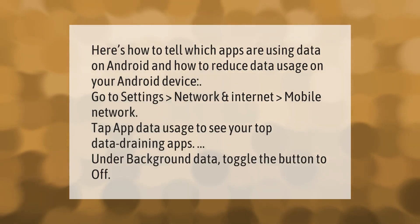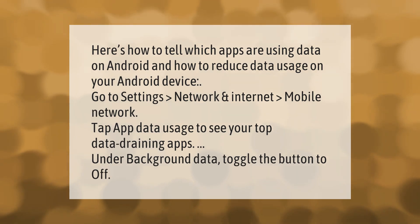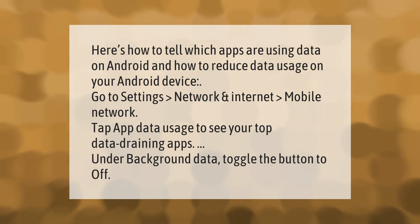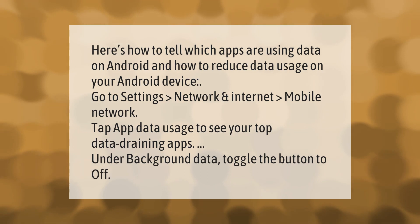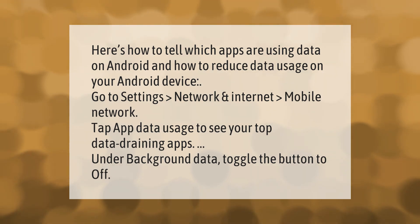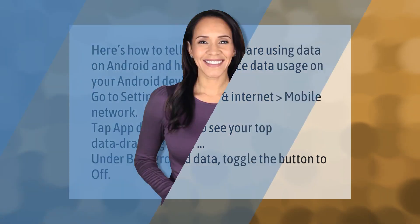Here's how to tell which apps are using data on Android and how to reduce data usage on your Android device. Go to Settings > Network and Internet > Mobile Network, then tap 'App Data Usage' to see your top data-draining apps. Under background data, toggle the button to off.